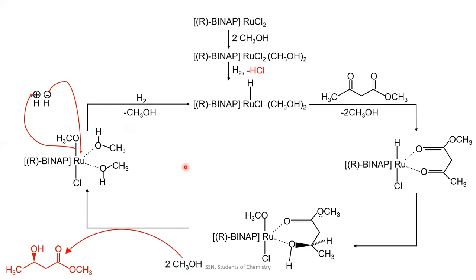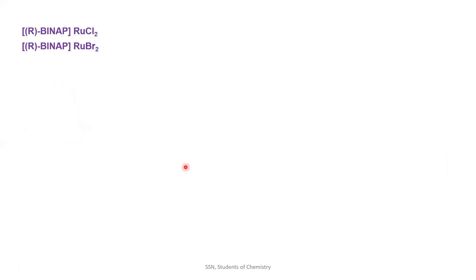This ruthenium dihalide BINAP complex like R-BINAP ruthenium chloride or BINAP ruthenium bromide can reduce only the functionalized ketones. That is the compounds in which there are more than one ketone functional group.